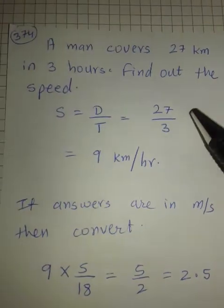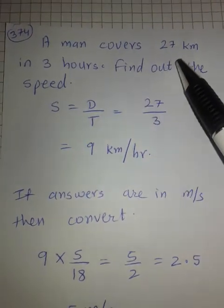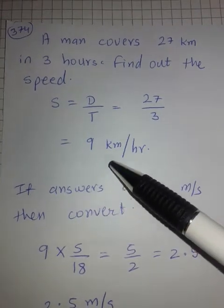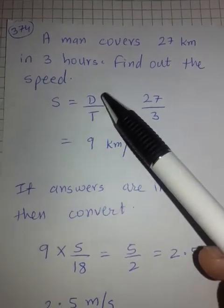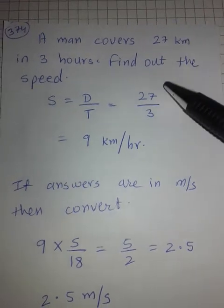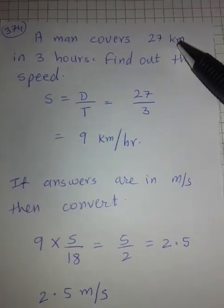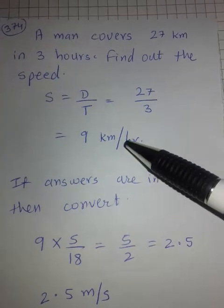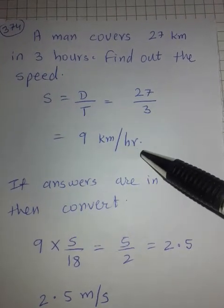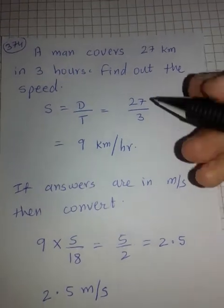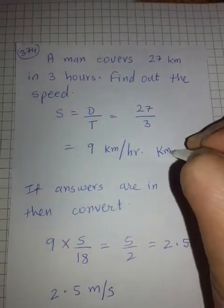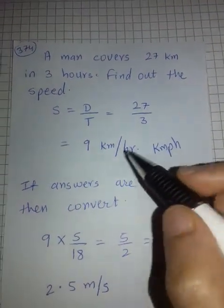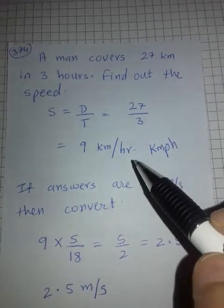Now a very basic example: a man covers 27 kilometres in 3 hours — find his speed. Using the formula S = D/T: Speed = 27/3 = 9 kilometres per hour, or KMPH. You can write it as KMPH or kilometres per hour — the meaning is the same.